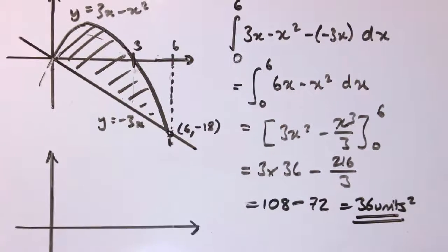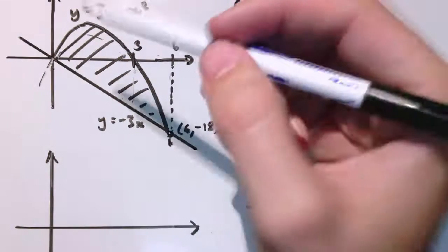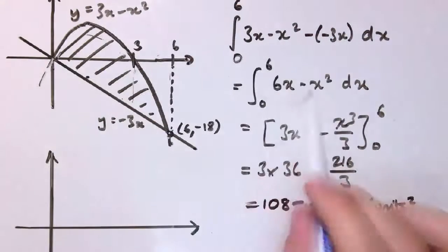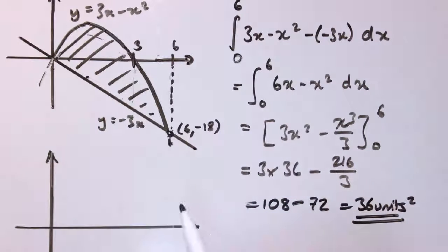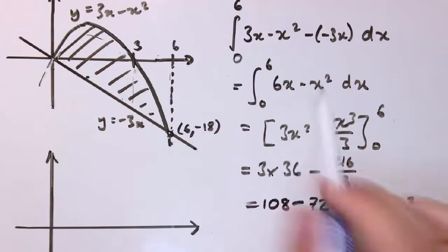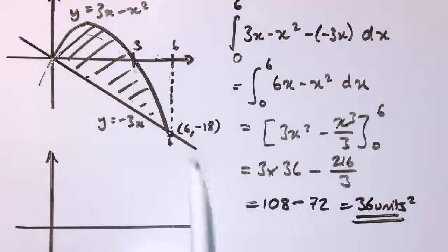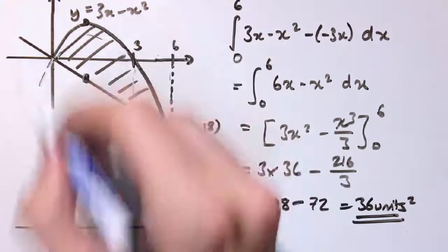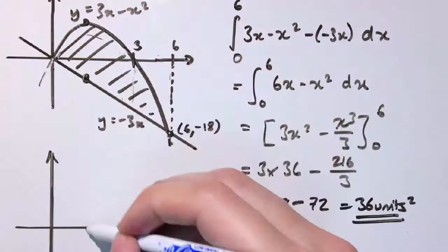Having done all that worrying about positive and negative areas — which we really do have to do when it's just one function and there's area above and below the axis — why did this turn out so easily? If you think about what we're doing: integrating this minus this, the function ends up being 6x minus x squared, which is the top function minus the bottom function. For any particular value of x it just tells me how far above the straight line the curve is.